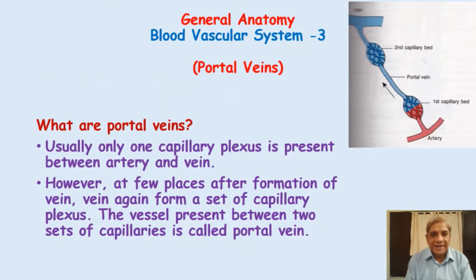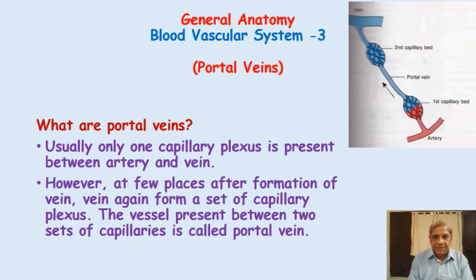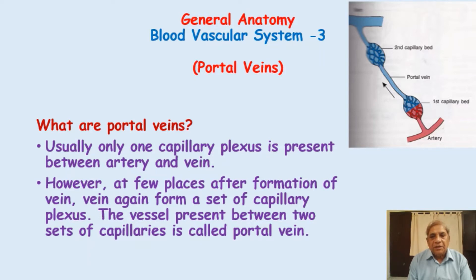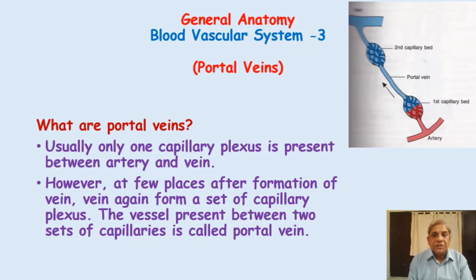The big question is: what are portal veins? You must have seen that usually only one capillary plexus is present between artery and vein. That means when the artery terminates in the terminal arterioles, meta-arterioles, then it breaks up into the capillary plexus, and the capillary plexus on the other end forms what is called as venules. Many venules unite to form a small vein, then a large vein, and ultimately the venous blood drains into the heart. So this is the usual thing — there is one capillary plexus between an artery and vein.